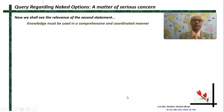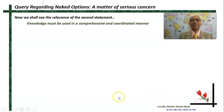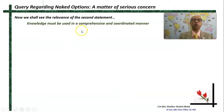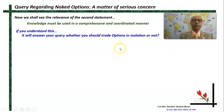If you don't use that helmet, then again it is the wrong use of options. That is what we discussed in the previous lesson. Now we shall talk about the relevance of the second statement: that knowledge must be used in a comprehensive and coordinated manner.